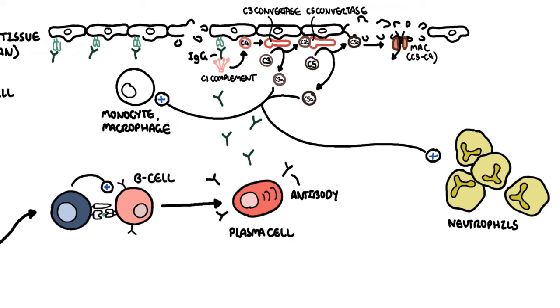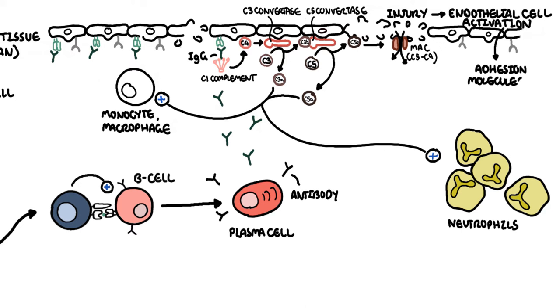The membrane attack complex causes cell lysis and ultimately cell injury. The injured donor cells will release chemicals that will activate surrounding endothelial cells to express adhesion molecules and release cytokines and chemokines to help attract other inflammatory immune cells to the area, such as neutrophils and macrophages.